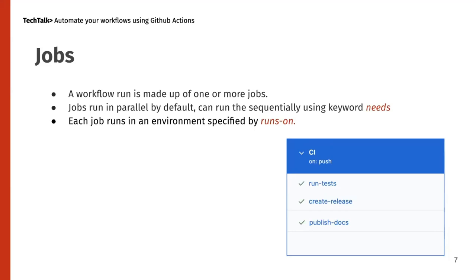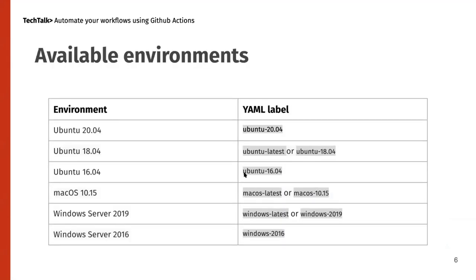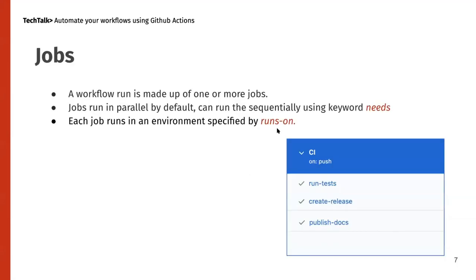You can make jobs run sequentially using a keyword called 'needs'. For example, if you want the create-release job to only run after the run-test job completes successfully, you specify 'needs' with the ID of the previous job — so the second one waits for the completion of the first. Each job runs in an environment specified by the 'runs-on' command, and you can choose which operating system to run a particular job.